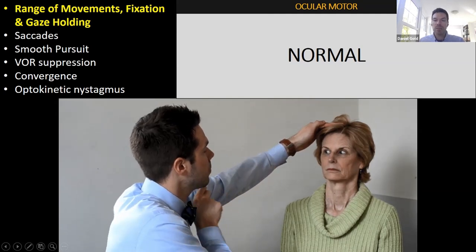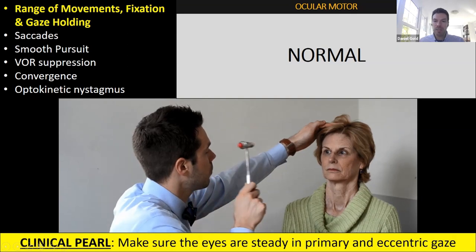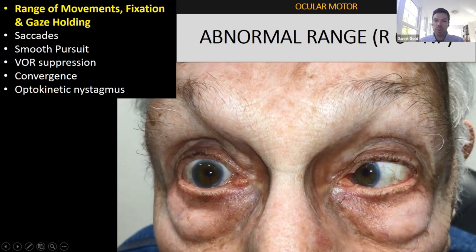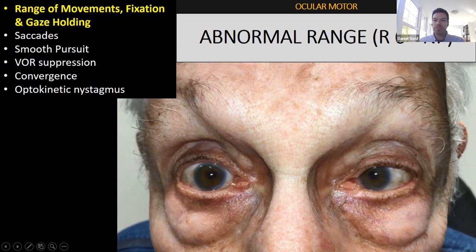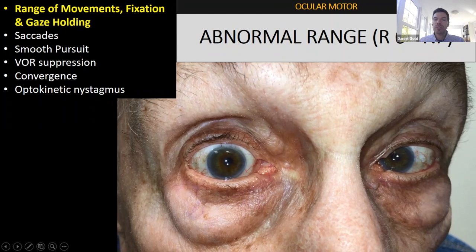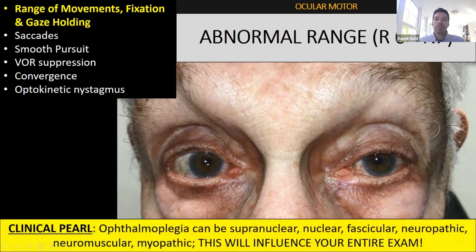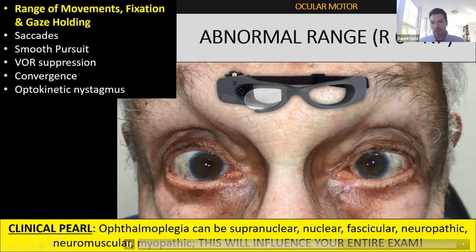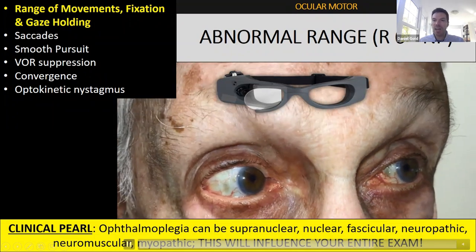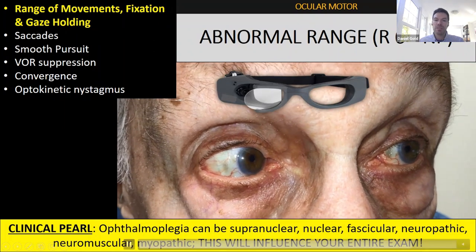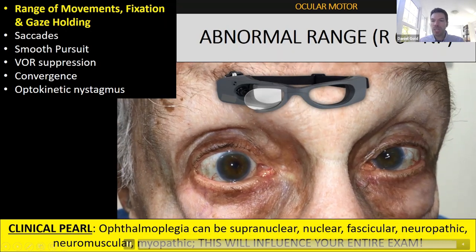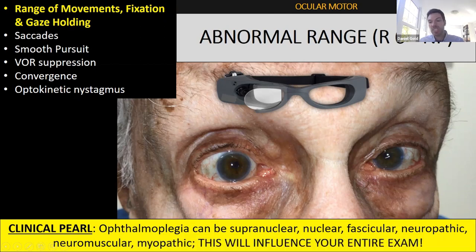We want to make sure the range of eye movements is normal — looking straight ahead, right, left, up, down — and that the eyes are steady in primary gaze. This patient has a sixth nerve palsy with abduction paresis in the right eye. Knowledge of this motility problem is going to affect everything. Ophthalmoparesis can be supranuclear as in PSP, nuclear, vascular, peripheral nerve palsy, neuromuscular as in myasthenia, or myopathic as in thyroid eye disease — this will influence your entire exam.